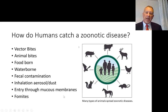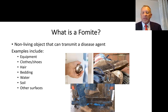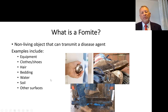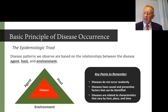Fomites deserve their own slide. A fomite is just an inanimate object where disease agents hang out. Dirty boots are one of the easiest ways to track germs around and introduce pathogens to places they shouldn't be. Equipment, clothes, bedding, water — organic material such as manure, straw, or bedding hides viruses, bacteria, and other organisms very well. These can persist inside organic matter because it stays cool, moist, and wet — and they like that.